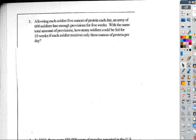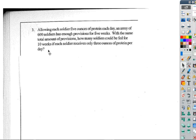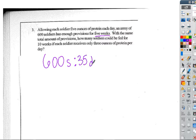So for this question, first you know that there are 600 soldiers for every five weeks, and that's also equivalent to 35 days, because 5 times 7 is 35, and then you know that that is 5 ounces.